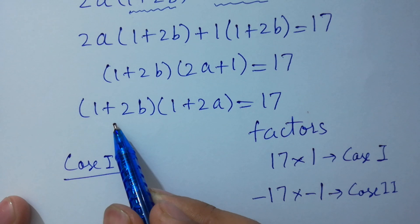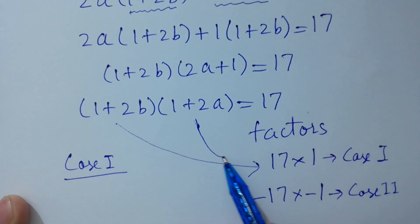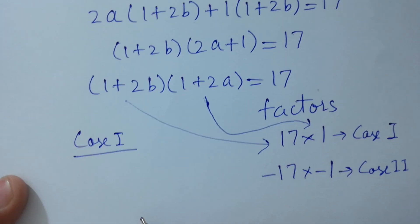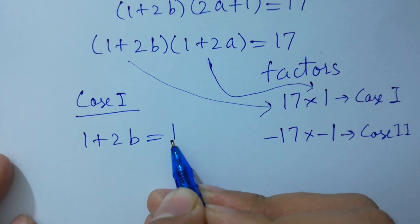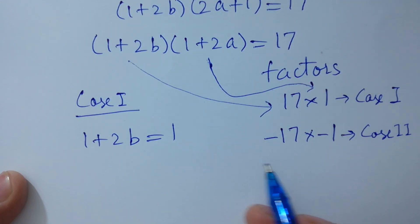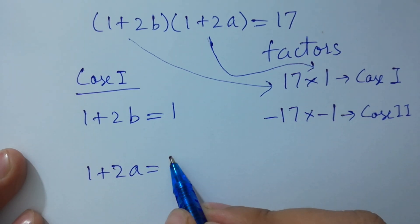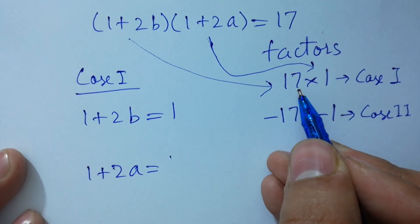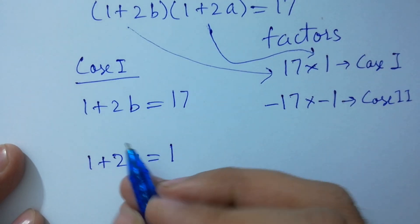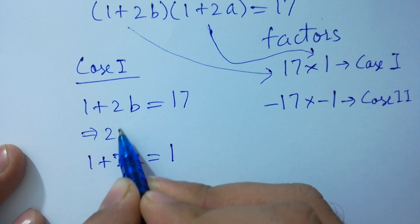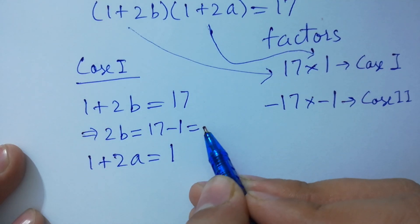For the first case: 1 plus 2b equals 17 and 1 plus 2a equals 1. Solving: 2b equals 17 minus 1, which gives 2b equals 16.